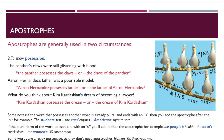Some notes: if the word that possesses another word is already plural and ends with an S, then you add the apostrophe after the S. For example: the students' test, the cars' engines, the Americans' right to vote. If the plural form of the word doesn't end with an S, you add it after the apostrophe. For example: the people's health, the data's conclusions, the women's U.S. soccer team.